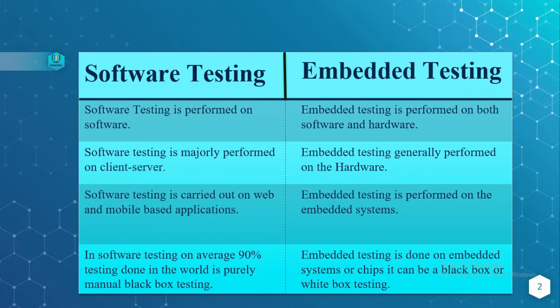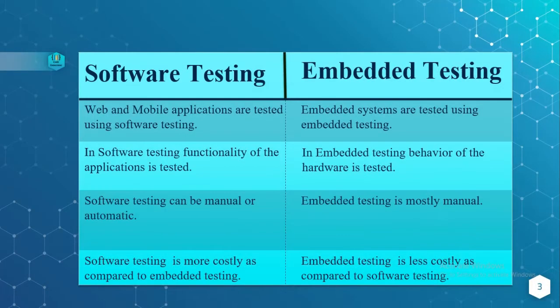Whereas embedded testing is done on embedded systems or chips. It uses either black-box testing or white-box testing. Web and mobile applications are tested using software testing, whereas embedded systems are tested using embedded testing.